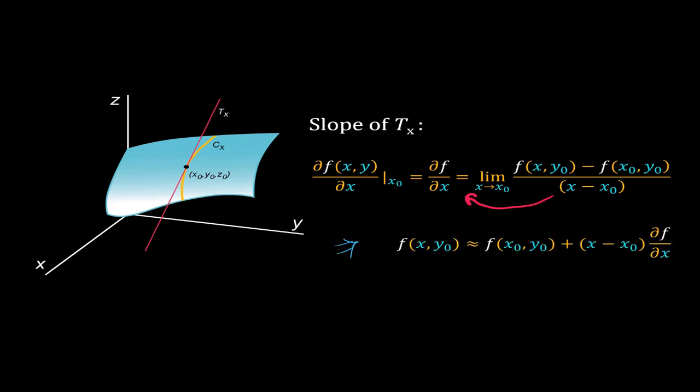By rearranging the terms and by approximation, we get F of X, Y0 is equal to F of X0, Y0 plus X minus X0 into del F del X. This is similar to what we have seen when we were studying Euler's method. In fact, this equation is the equation of the tangent TX.